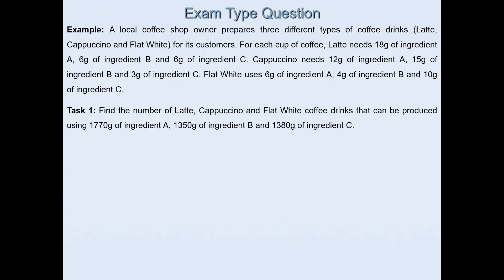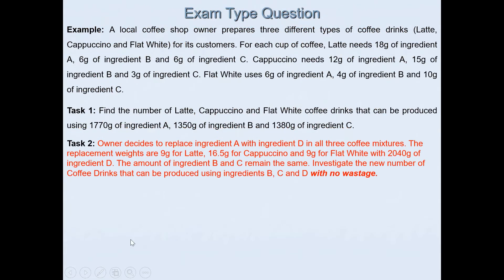Task one, which was done in my previous video, asks to find the number of latte, cappuccino and flat white coffee drinks that can be produced using 1770g of ingredient A, 1350g of ingredient B and 1380g of ingredient C. In this video, we'll be focusing on the excellence part to the problem.